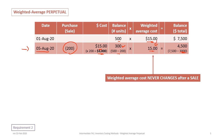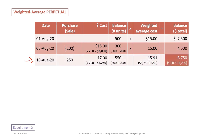What you'll notice here is that the weighted average cost never changes after a sale. Then on August 10th we have our first purchase: 250 units at a cost of $17, totaling $4,250. The balance in inventory is now 550 units — the 300 from before plus the additional 250 purchased.